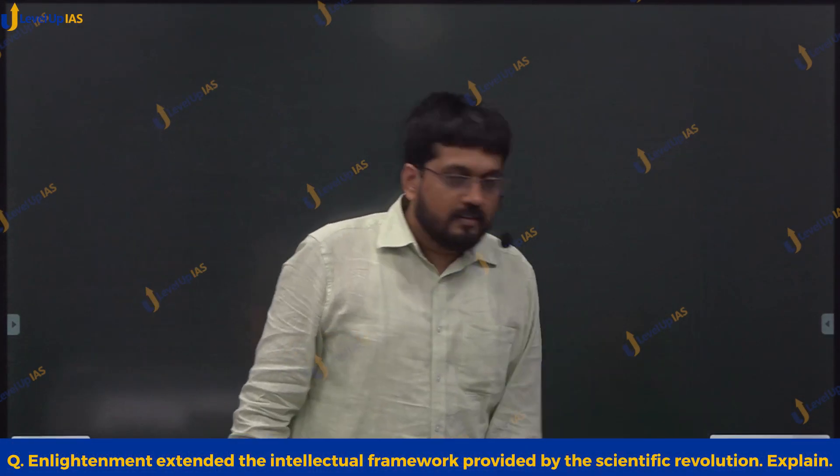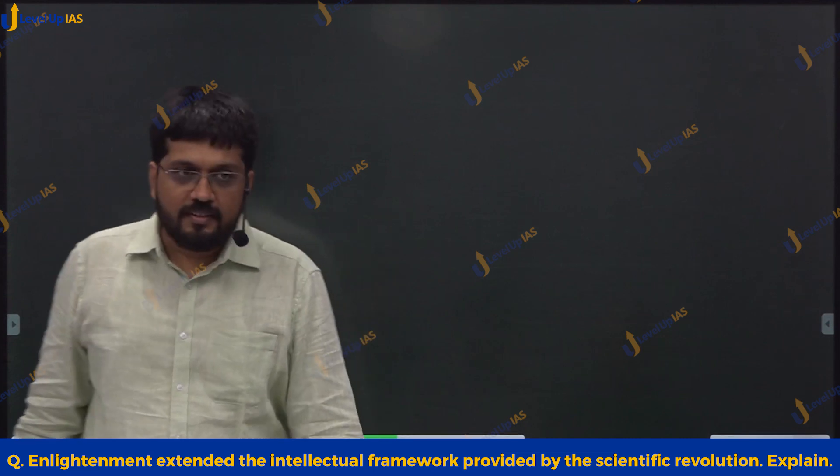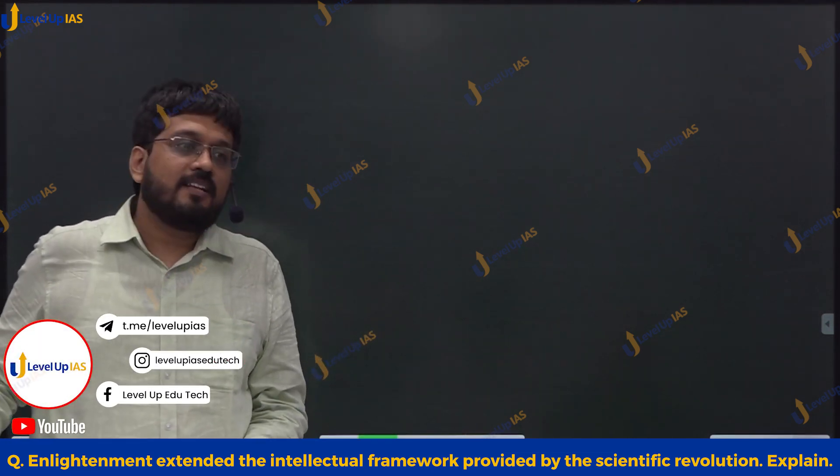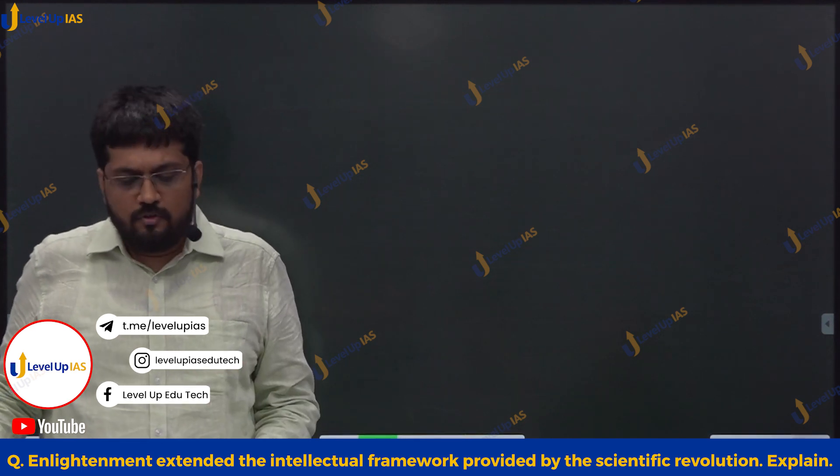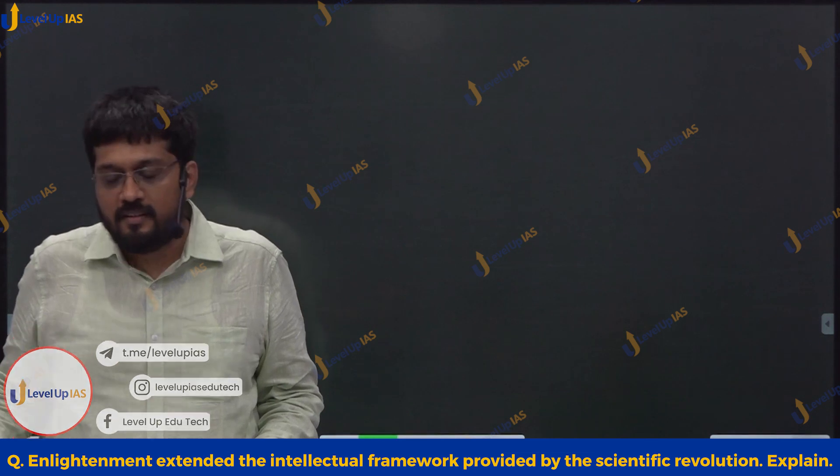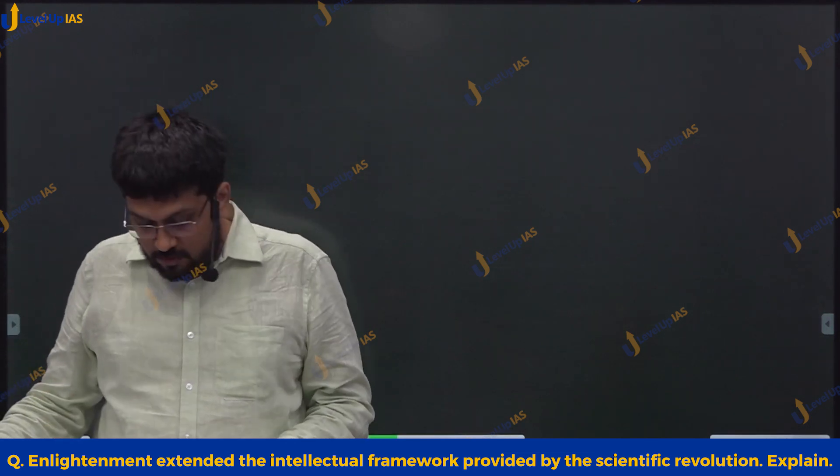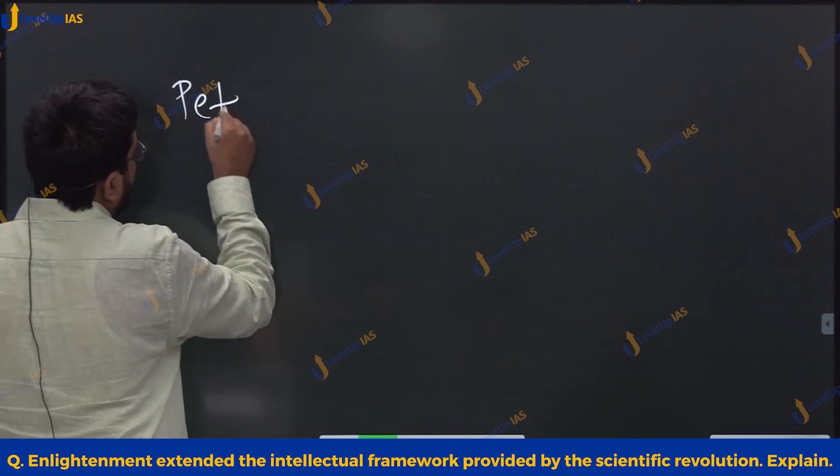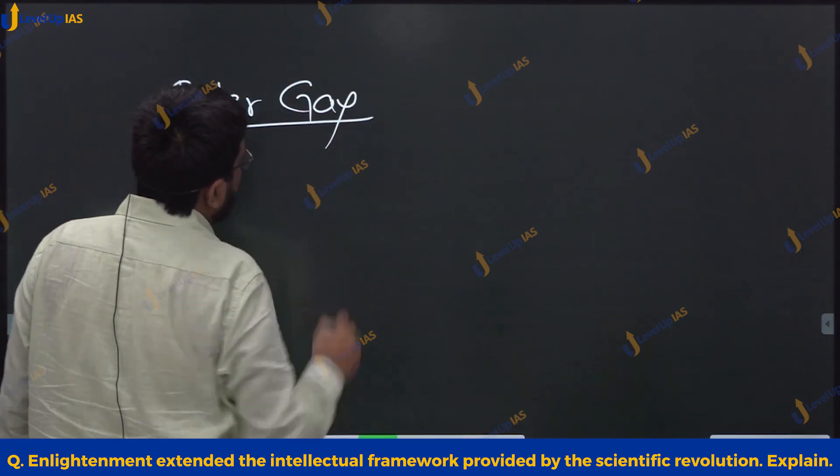Now coming to this continuity or not between the scientific revolution and enlightenment, it is very simple. We have a debate between two important historians. One is Peter Gay and the other is Margaret Jacob.